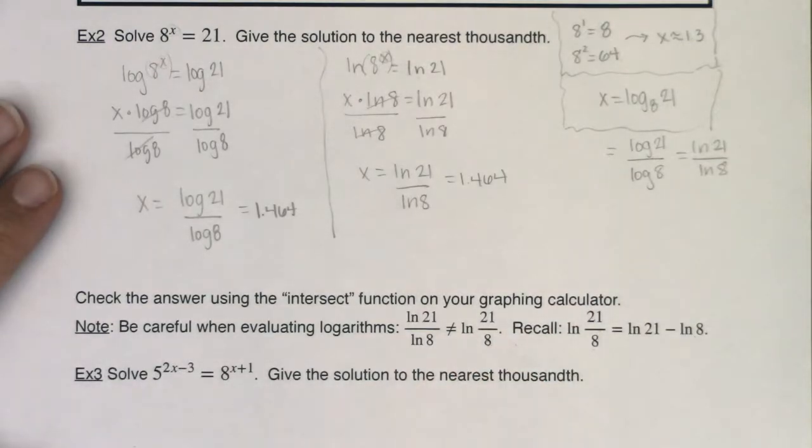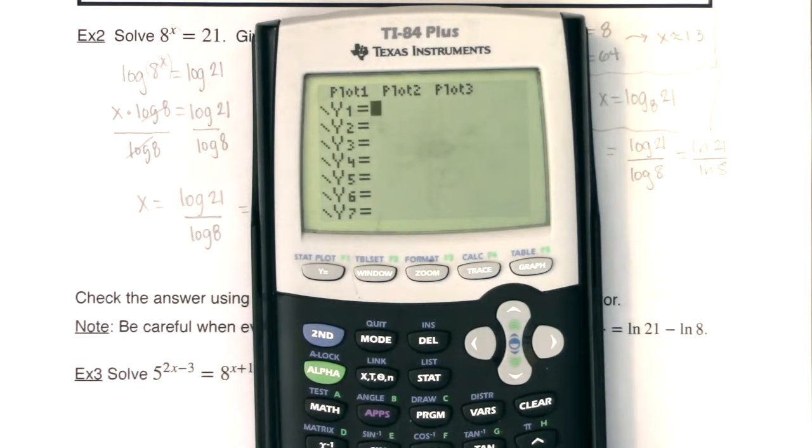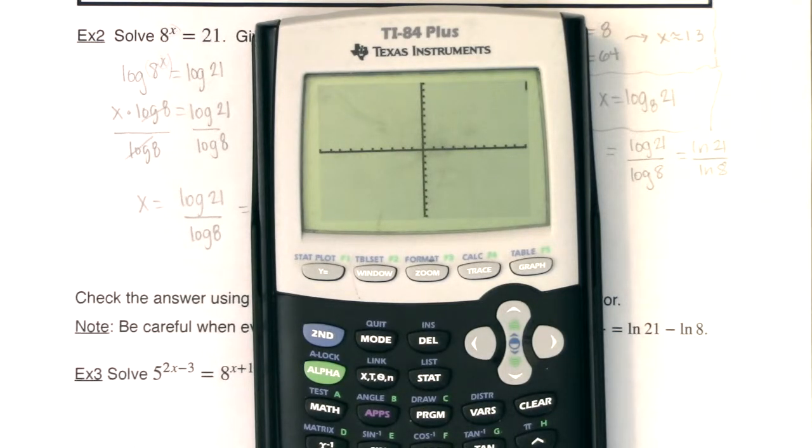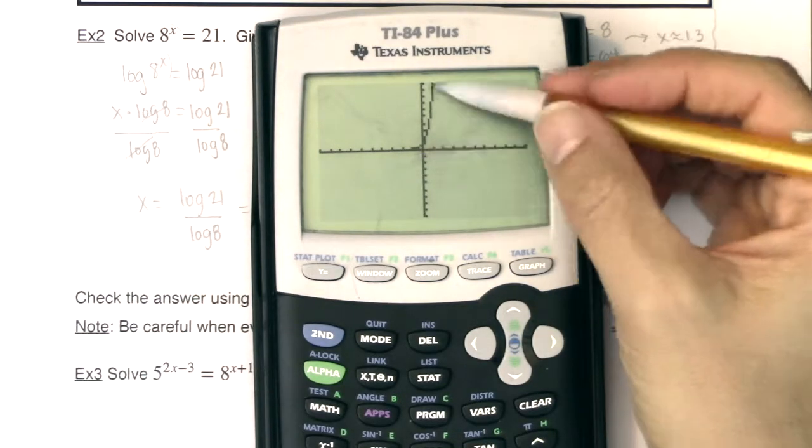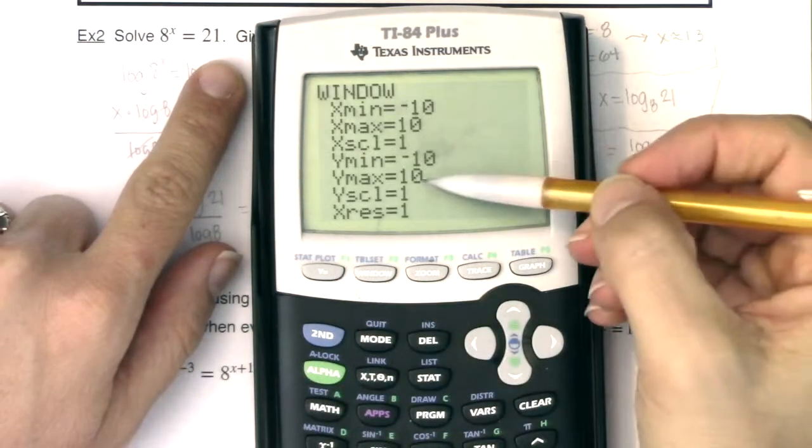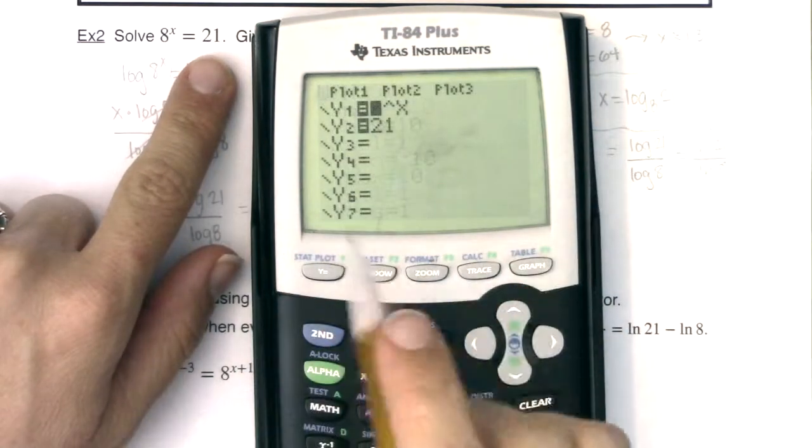So let's go ahead and go to our y equals. I'm going to clear out what I have in here. I'm going to do 8^x. And then I'm going to set it equal to 21. So I'll put y1 as 8^x. And I'll put y2 as 21. I'm going to hit zoom 6. And let's see what we got here. There's my exponential growth. And I can't even see my other function. I only see the exponential growth. And that's because if you think about our window, let's look at our y max. Our y max is 10.